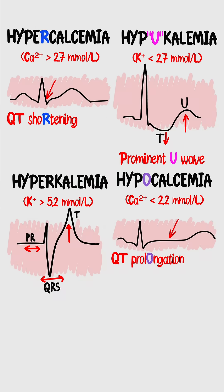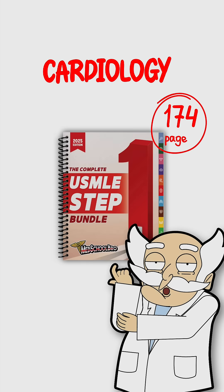Calcium sets QT — high shortens, low prolongs. Potassium shapes the T — low gives you a U, high gives you peaked T-waves, then widens. You know these cold, or your score develops a terminal rhythm.